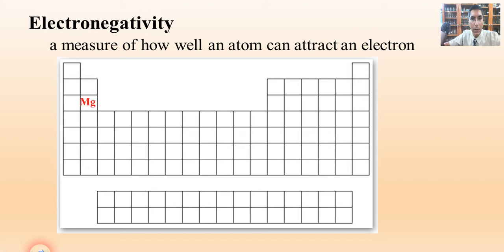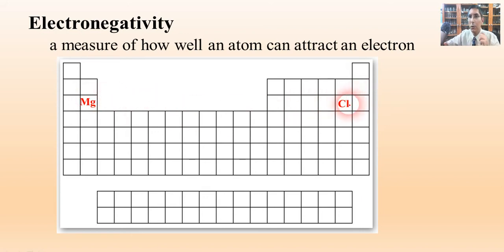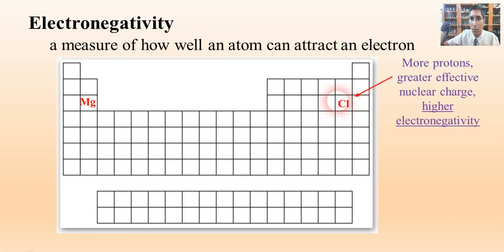Let's look at two atoms to compare: magnesium versus chlorine. We're going to look at this in terms of the two factors we learned about in the last video — effective nuclear charge and shielding effect. Since we're looking at a horizontal comparison, it's going to be effective nuclear charge. Chlorine has more protons for the same number of energy levels, so it has greater effective nuclear charge.